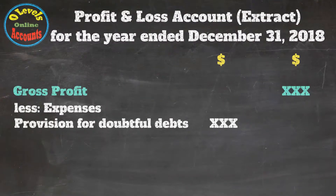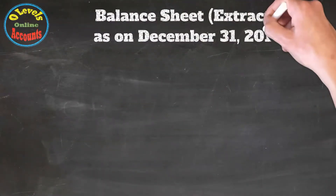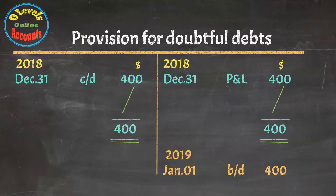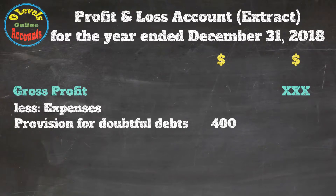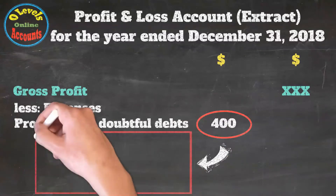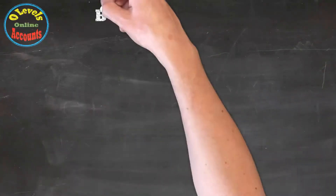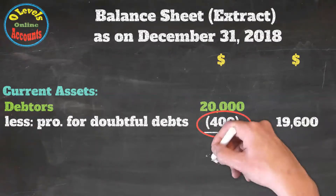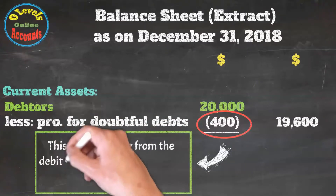This is the profit and loss account extract — the provision for doubtful debts will appear under the expense heading. This is the balance sheet extract: the provision for doubtful debts account is the contra asset account and will appear under its paired account, which is debtors. In the provision for doubtful debts account, we create the provision on the credit side by $400 and balance the account at year end. The $400 appears from the credit side entry in the provision account, and in the balance sheet it appears under debtors with a value of $400, coming from the debit side or closing balance of the account. This is the accumulated figure.